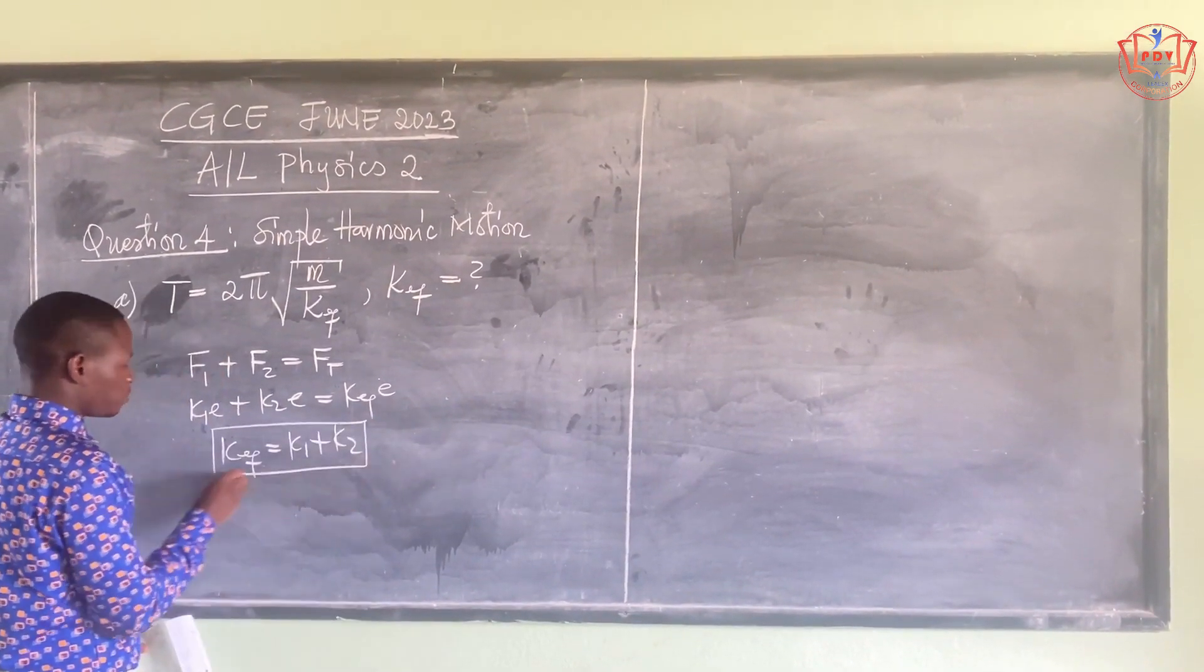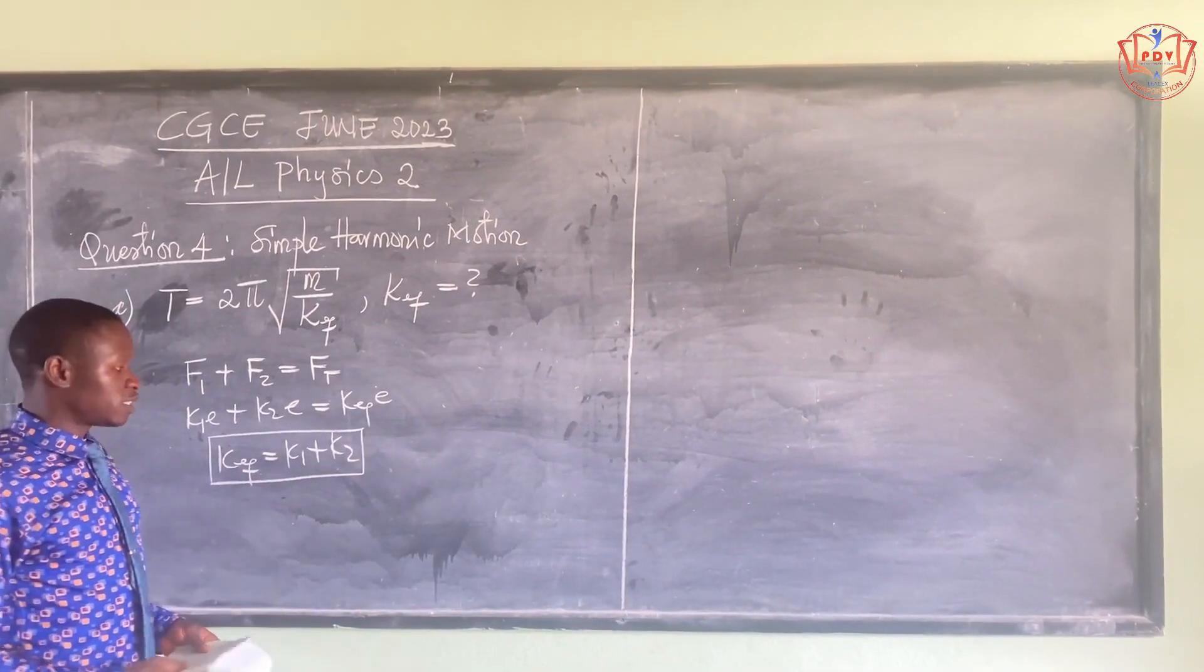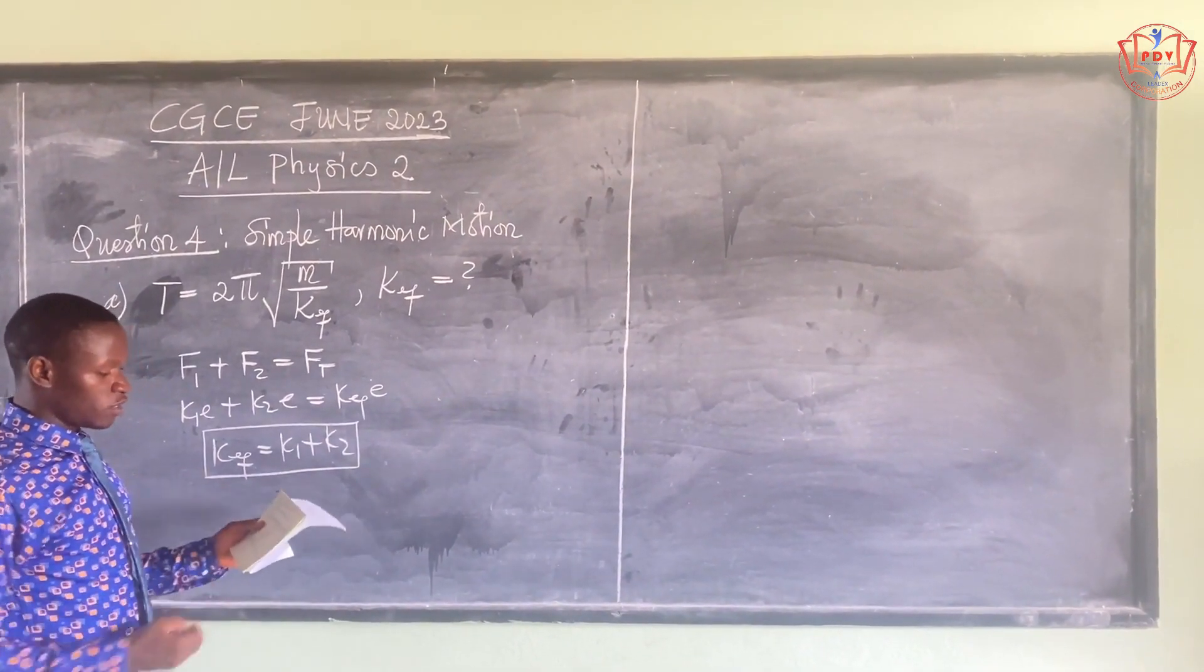So from here, we are told that the springs are identical. So it therefore means that k1 and k2 are equal.